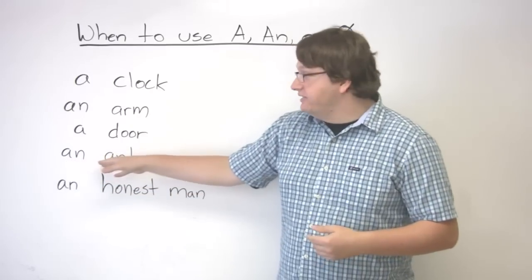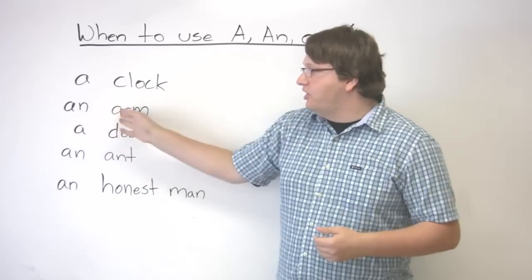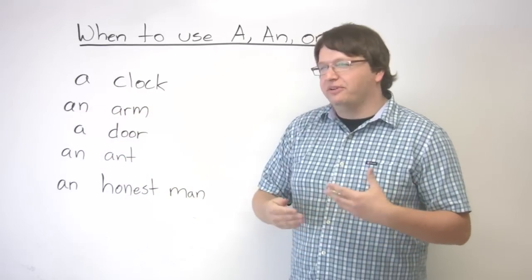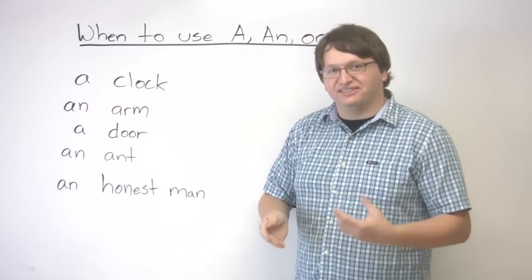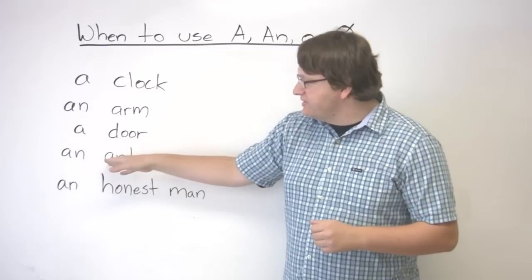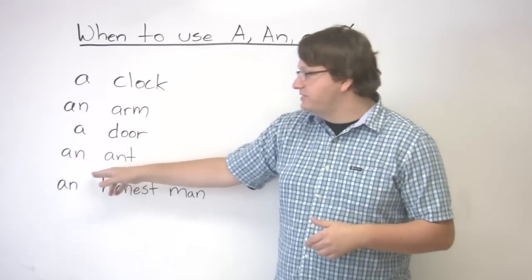Okay? Here we have an ant, same with an arm. It would sound very, very silly to say a ant, right? So because this is a vowel sound, we have to use an.